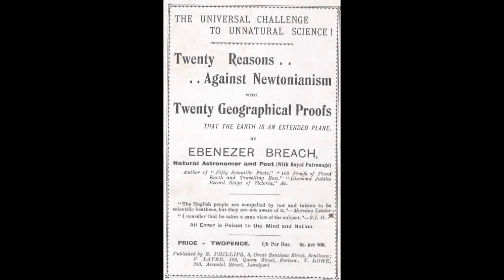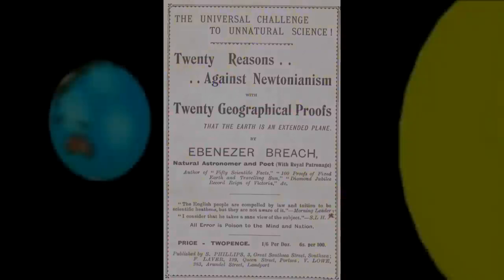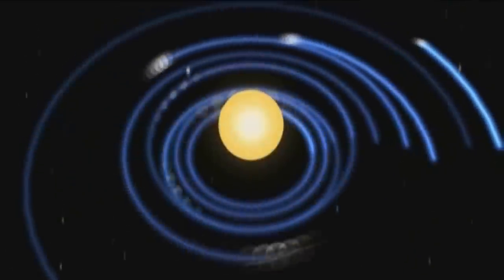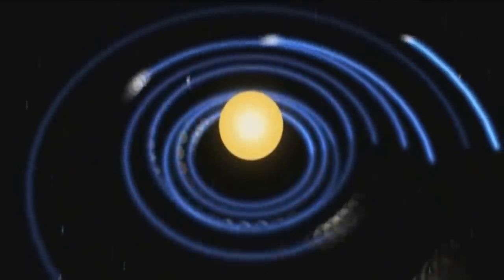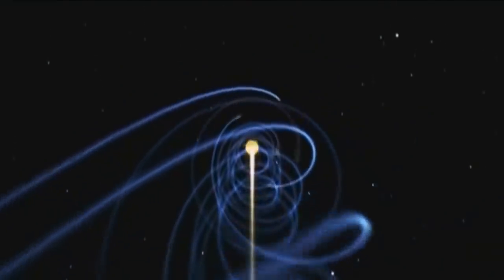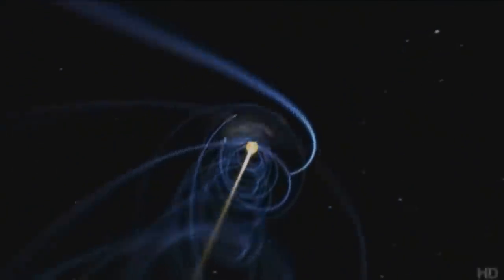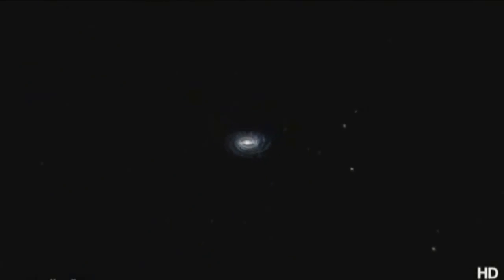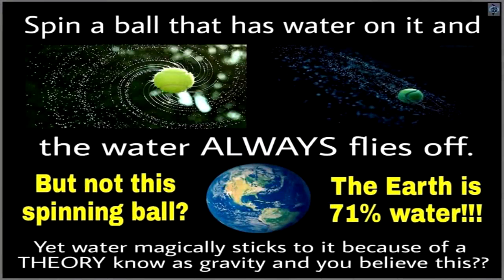20 Reasons Against Newtonianism by Ebenezer Breach. 1. Because the earth has no axis, therefore nothing on which to revolve. An imaginary mathematical line is substituted, but no solid body could revolve on an imaginary axis or line. It is an imaginary cause that can only produce an imaginary effect, so all that follows such a cause must be imaginary. If anything be placed on the top of a revolving body, it will fly off at a tangent.